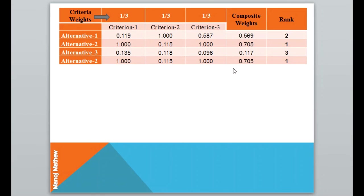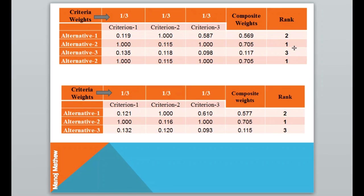These BG local weights are substituted into the decision matrix. We then compute the rank of each alternative using the composite weights. The rank is 2, 1, 3, and 1 — which is the same as the rank obtained previously. Comparing the ranking order before and after adding the alternative, we can see that alternative 2 remains the best alternative in both cases.